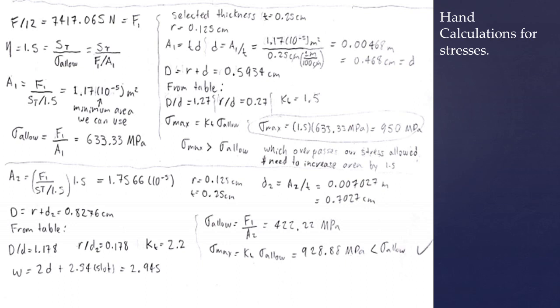And then we used the stress concentration factor of 2.2. We found our allowable stress of 422.2 MPa. And as such, we multiplied it by our K and we got our max value to be 928.8 MPa, which is less than the initial maximum stress that we had.